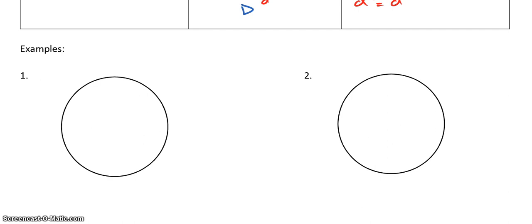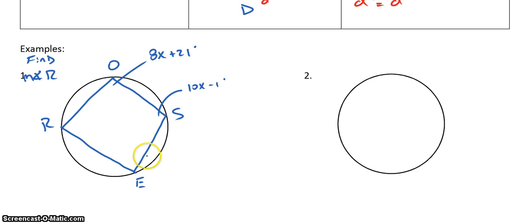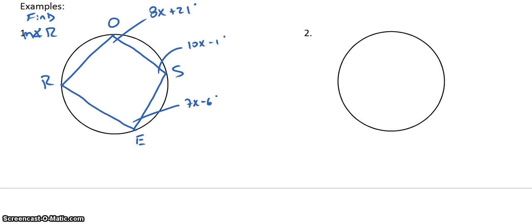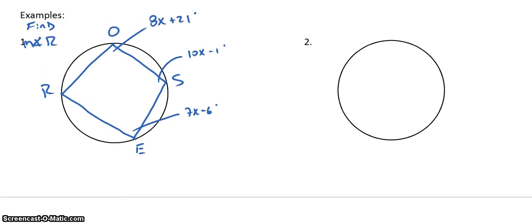Alright? So, those are our three theorems. Let's do two examples. And, then we're done. So, the first one. We're going to say, I want to know what the measure of angle R is. So, find the measure of angle R. So, our picture is going to look like this. And, I'm going to go R, O, S, E. And, I'm going to tell you. Angle O is 8x plus 21 degrees. Angle S is 10x minus 1 degrees. And, angle E is 7x minus 6 degrees. Now, looking at this problem here. I know I have an inscribed quadrilateral.